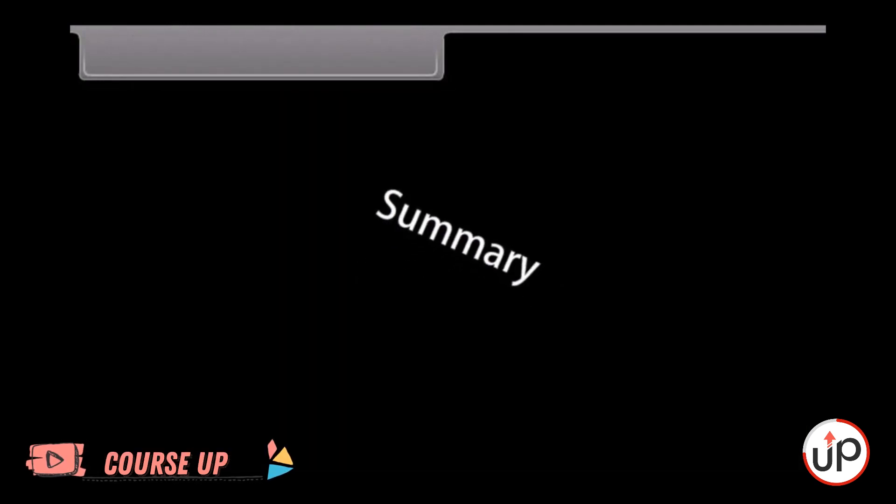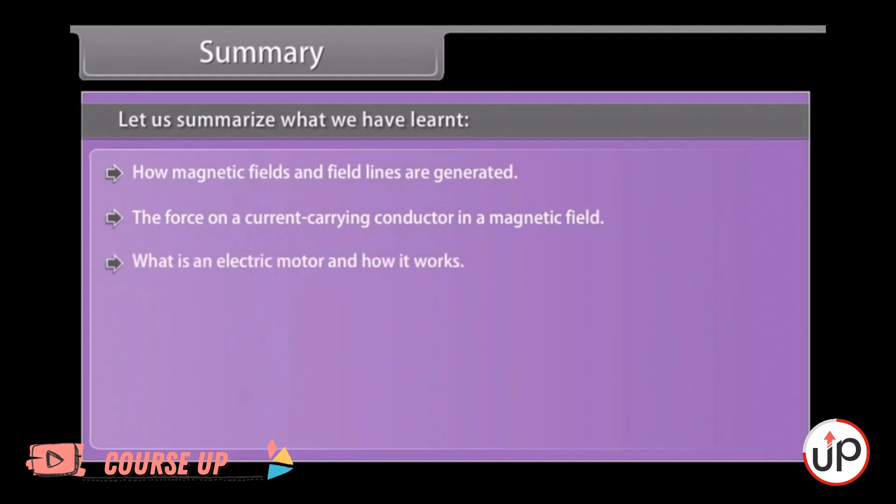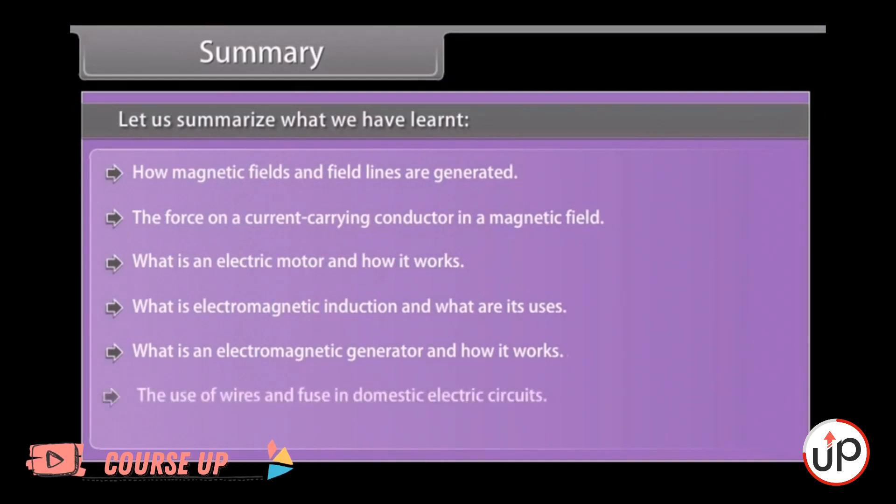Summary. Let us summarize what we have learned. How magnetic field and field lines are generated. The force on a current carrying conductor in a magnetic field. What is an electric motor and how it works. What is electromagnetic induction and what are its uses. What is an electromagnetic generator and how it works. The use of wires and fuse in domestic electric circuits.